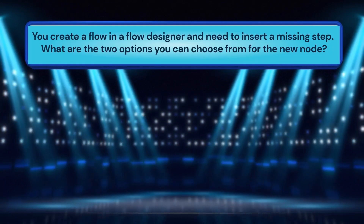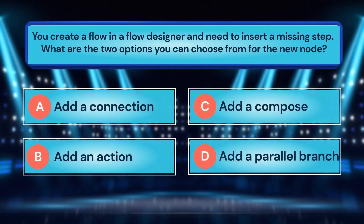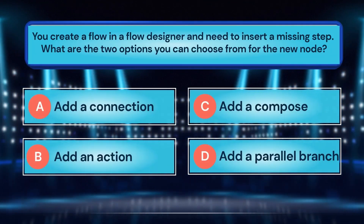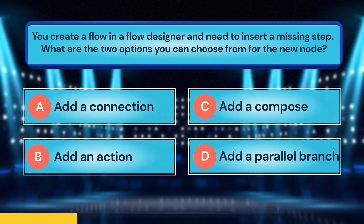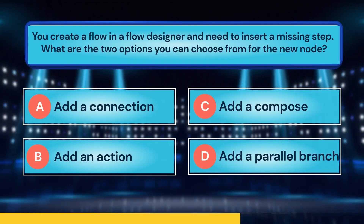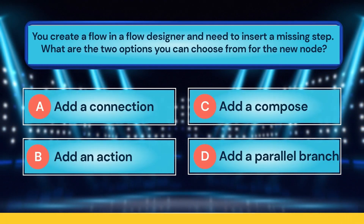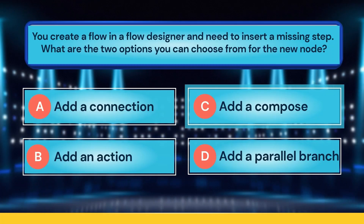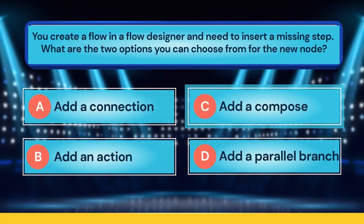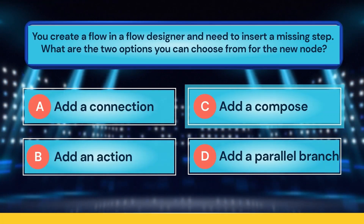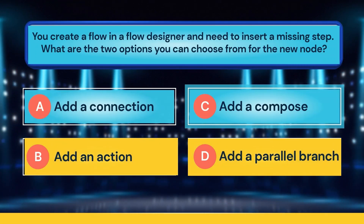You create a flow in a flow designer and need to insert a missing step. What are the two options you can choose from for the new node? A. Add a connection. B. Add an action. C. Add a compose. D. Add a parallel branch. Time is up! The correct answer is B, add an action, and D, add a parallel branch.